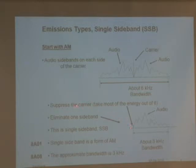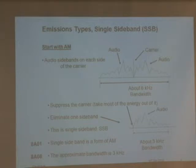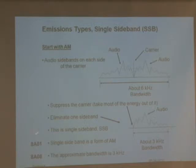So they came up with electronics that takes most of the energy out of the carrier — it suppresses it. Out of 100 watts, maybe only 1 watt stays in the carrier, leaving 99 watts. Then they get rid of one of the audio sidebands, say the lower one, putting all 99 watts in the remaining sideband. That signal is much louder than the 25 watts you'd hear from a regular AM sideband. Single sideband is a form of AM. The approximate bandwidth is 3 kilohertz, because you're only using half of the original 6 kilohertz.